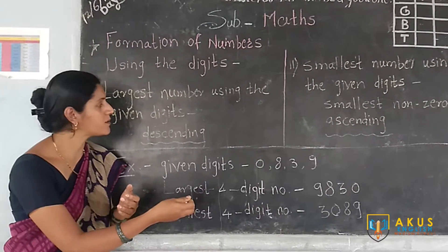Whatever digits you have been provided — 4, 5, 6, or any numbers — just arrange them in descending order from greatest to least, and you will get the largest number. Exactly opposite to that, to form the smallest number, arrange the digits in ascending order from smallest to greatest. But keep in mind: start from the smallest non-zero number.